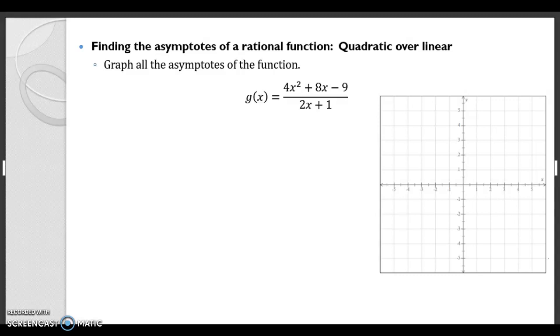Hey everybody, in this video we're going to talk about finding the asymptotes of a rational function quadratic over a linear. Before we actually dive into this, we need to talk about one more type of asymptote and these happen when we have a higher degree on the top than on the bottom.